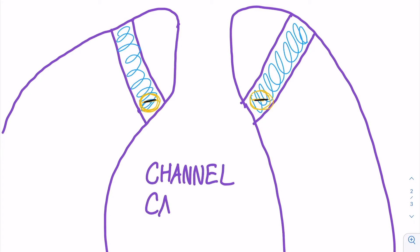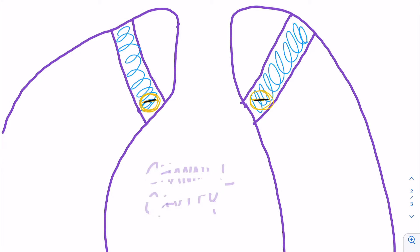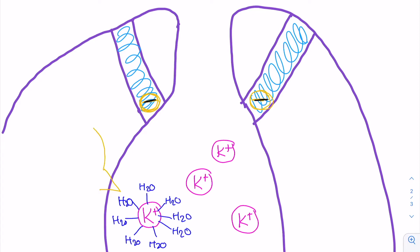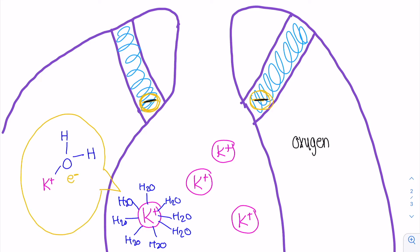In the cavity of the channel, each potassium ion is coupled with eight water molecules. The oxygen in the water molecule steals an electron from the potassium ion, forming its bond.